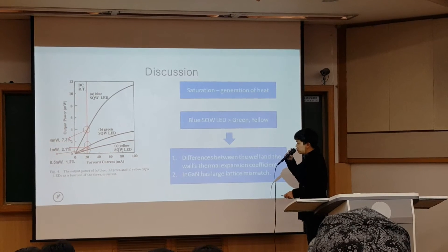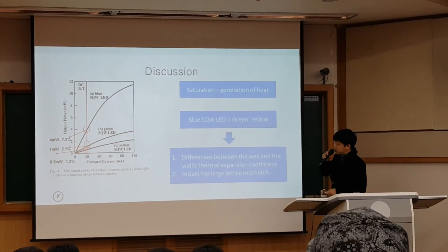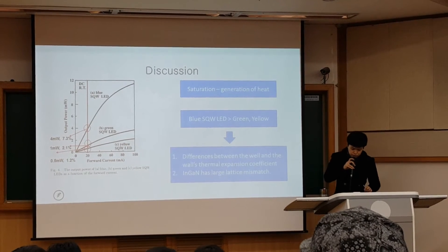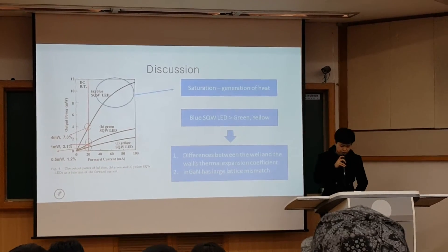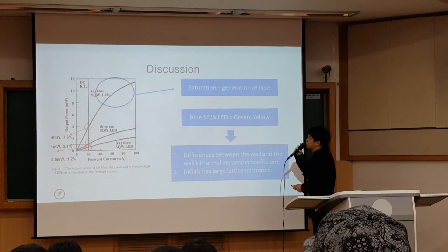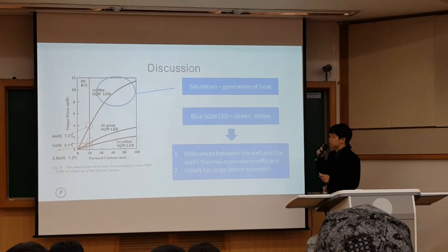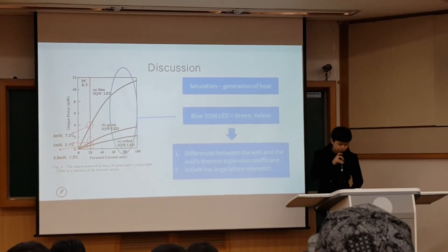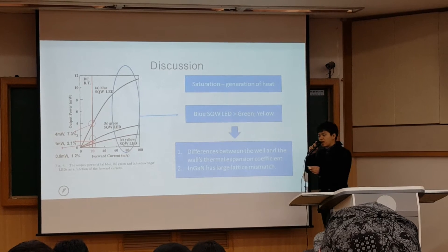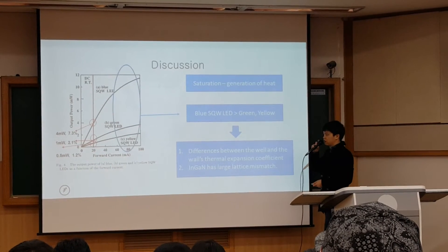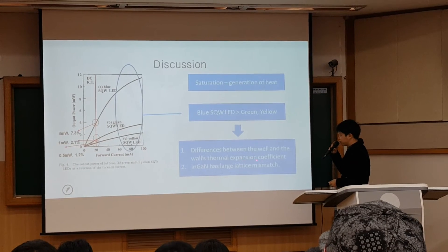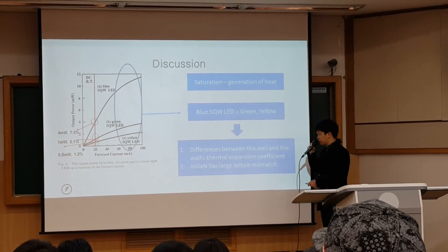Here is the output power as a function of current. There are two important things to remember. First, above 60 milliamperes, the output power almost saturates, probably due to the generation of heat. Second, comparing blue single quantum well LEDs with green and yellow: the blue has much higher output power. This can be explained by two reasons — the difference in thermal expansion coefficient between the well and barrier layers, and the large lattice mismatch of Indium gallium nitride.